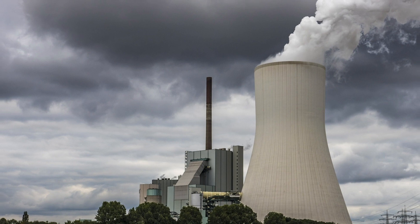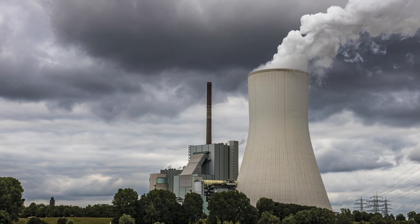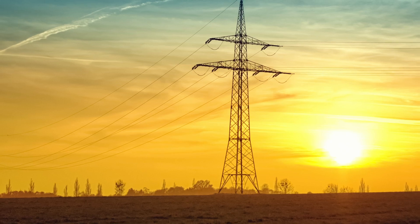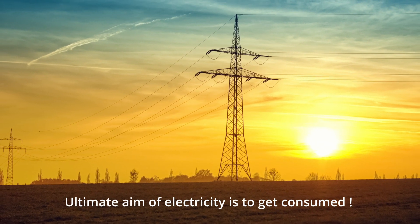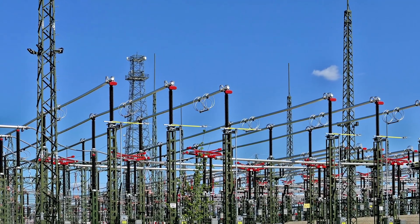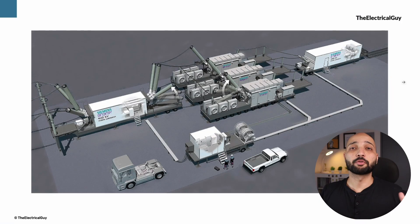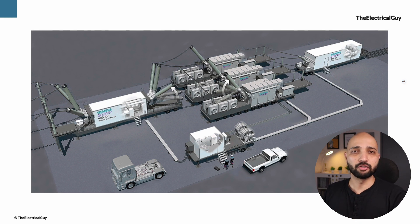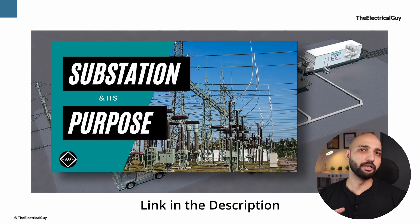After the generation of electricity, it is necessary that the electricity is transmitted and then distributed to the end consumer, because the ultimate aim of electricity is to get consumed. That is why power system transmission and distribution networks were built, and substations play a very crucial role in both transmission and distribution networks.